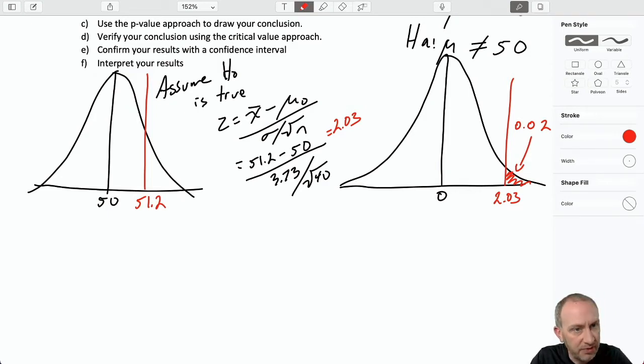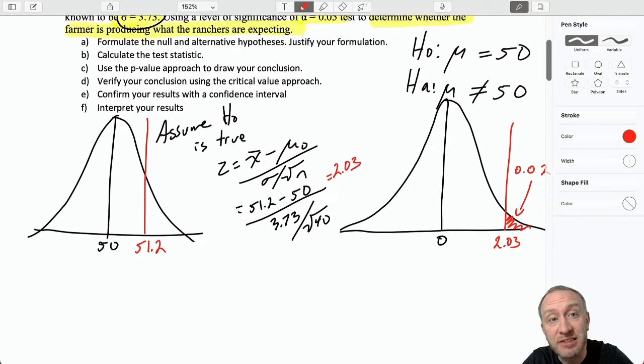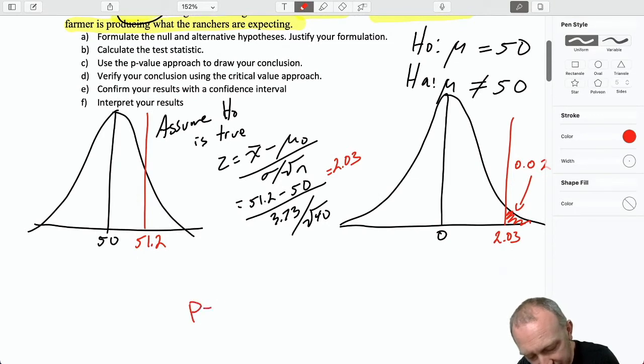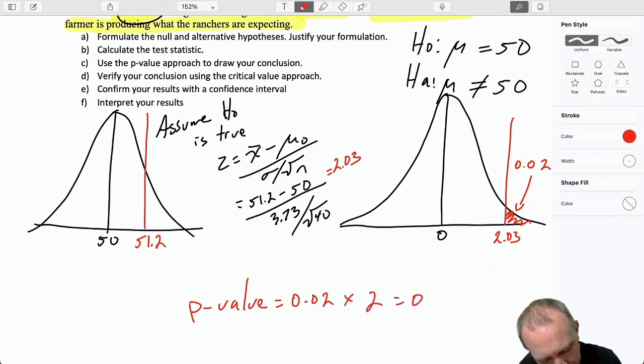Is that my p-value? Be careful. Often it's the case, again, that students will just be in this routine. And you're looking for that probability that corresponds with your test statistic. And that's what you go with. This is a two-tailed test. Because it's a two-tailed test, we have to double that. So our p-value is 0.02 times 2. So it's actually 0.04.